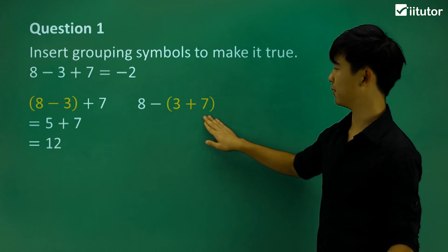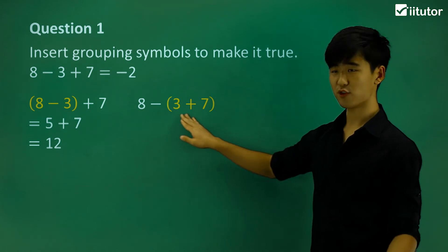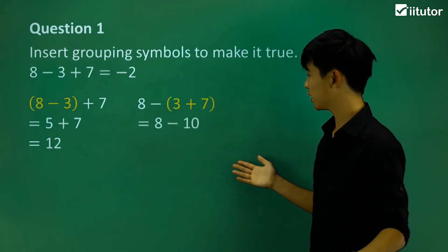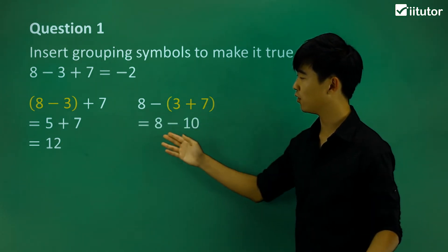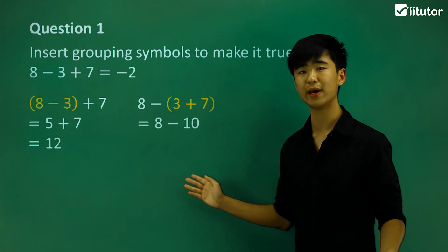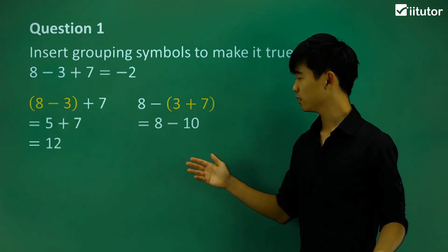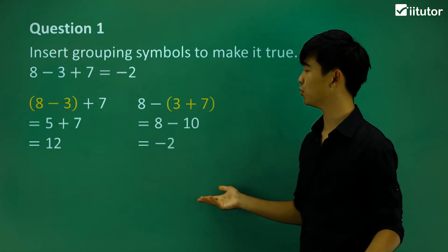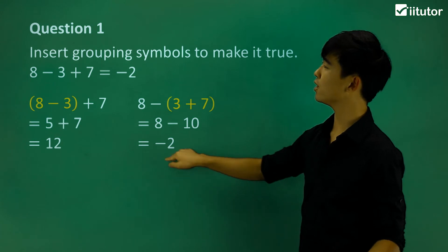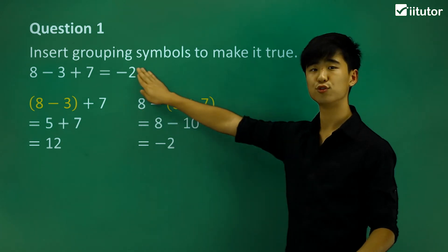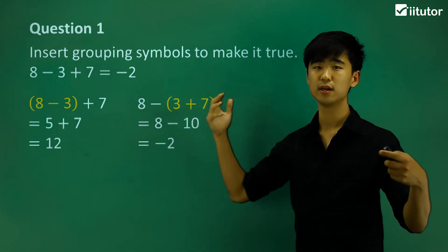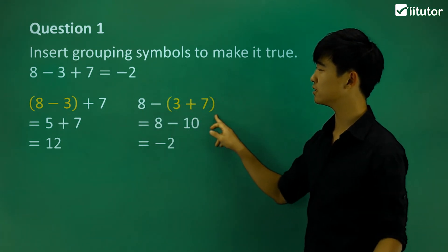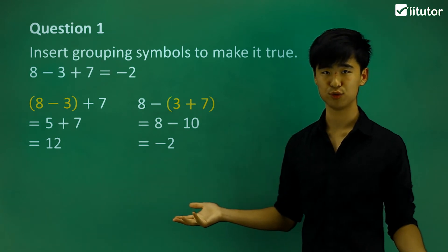Now let's take a look at this one. 3 plus 7 first of all — that's just 10. Now 8 take away 10 gives me negative 2. So negative 2 and negative 2 — we found the pair of brackets, or grouping symbols, that makes this statement true.